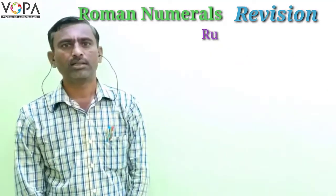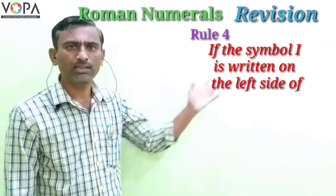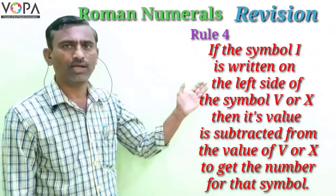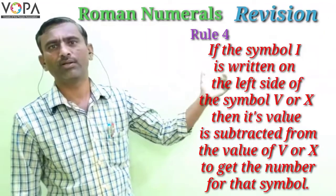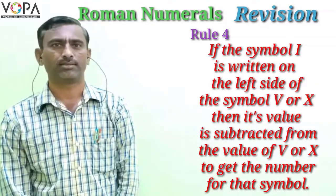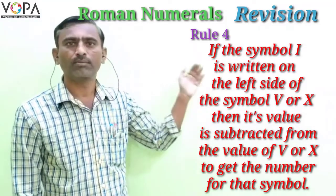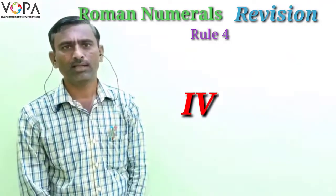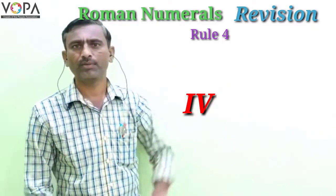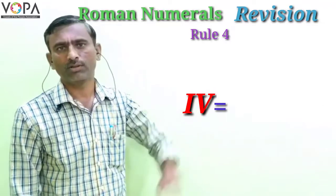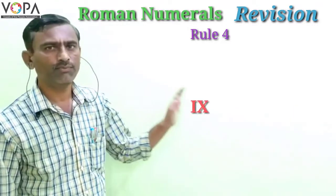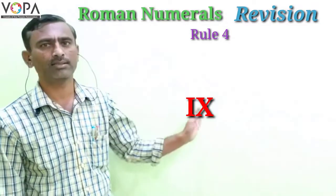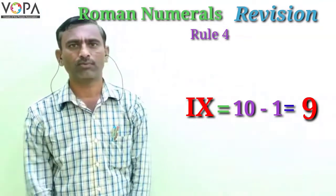In the fourth rule, if the symbol I or X is written on the left side of V or X, then its value is subtracted from the value of V or X. For example, if we write IV, then the value of I is subtracted from the value of V: IV equals 5 minus 1 equals 4. If we write IX, then the value of I is subtracted from the value of X: IX equals 10 minus 1 equals 9.